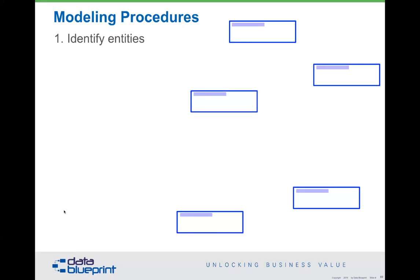The next thing we do is label each of the entities — we may simply call them the noun of the thing we're trying to describe. One reason data modelers get in trouble is because one of the highest levels of abstraction is something called a party — a party could be a person or it could be a company. So an abstract of both those terms is a party, and people from the outside say the data modelers are partying. Be aware of what you're talking about, and don't let people misunderstand that you're doing very serious work.